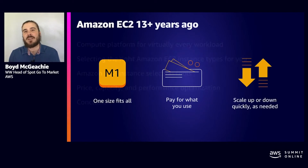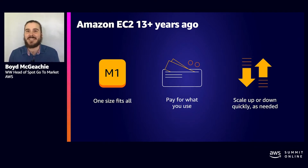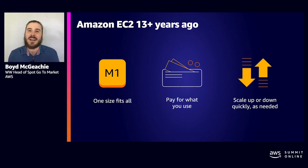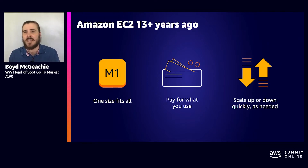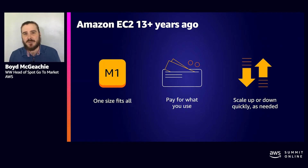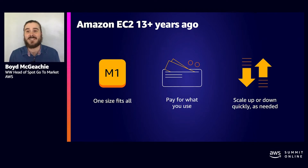To begin, it's a bit of a history lesson. More than 13 years ago, Amazon EC2 launched the M1. At the time, it was a single instance for every possible workload. The really exciting thing was not necessarily the M1, but the fact that you could pay for what you use, scale up and down, and pay by the hour. But naturally, customers said to us, we love this elasticity, but we actually have a lot of different applications with different performance characteristics, so we need more instance options.